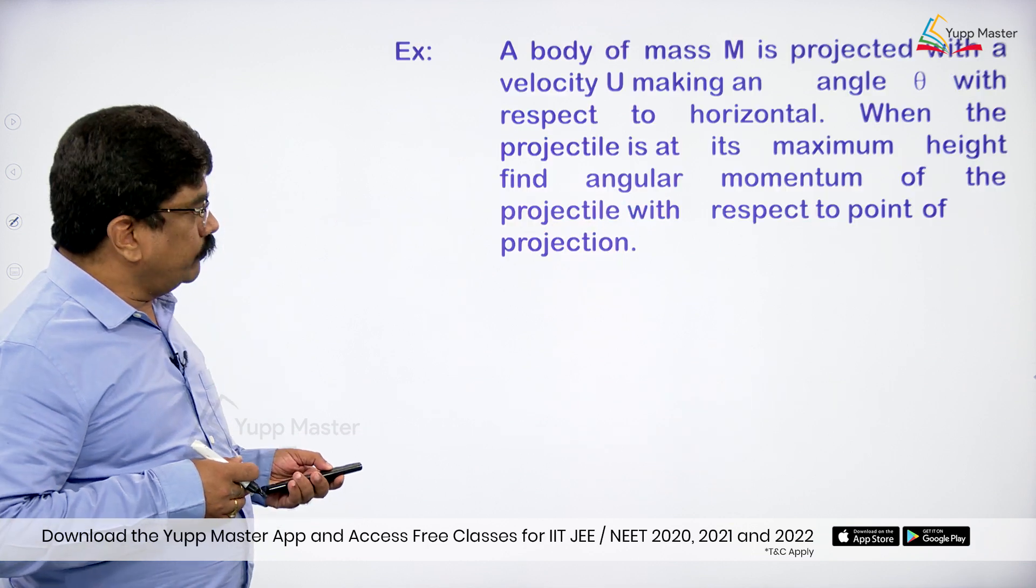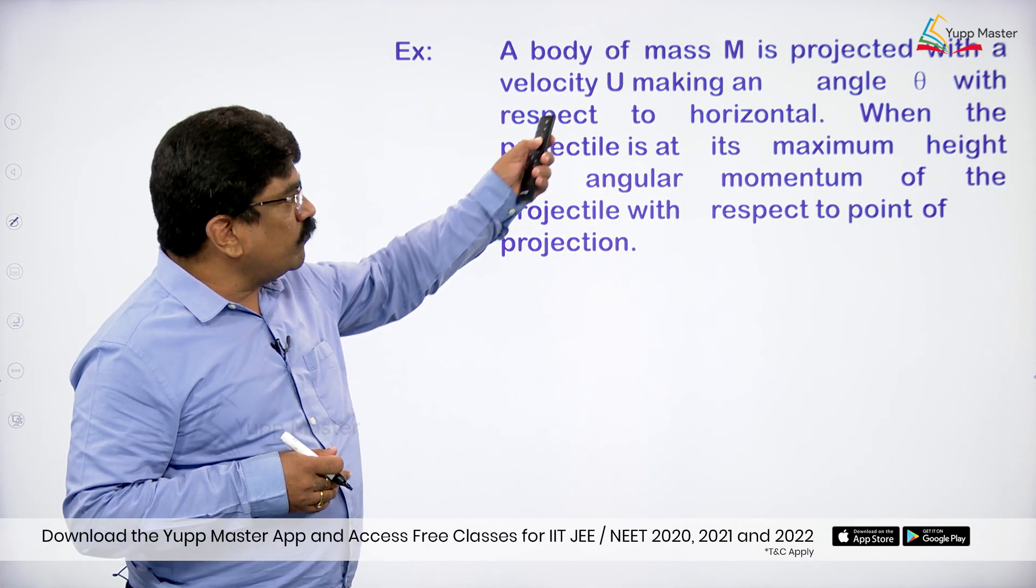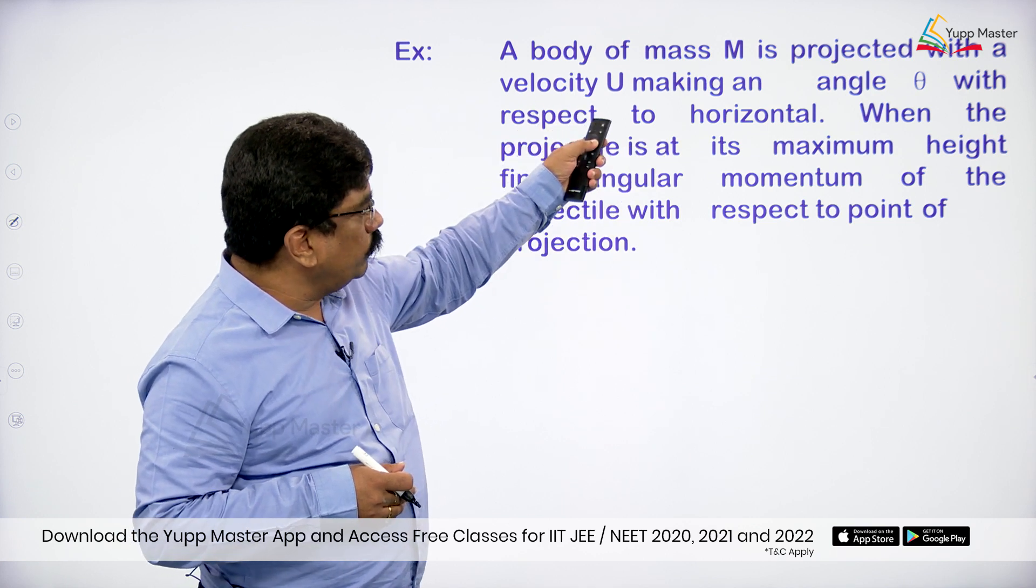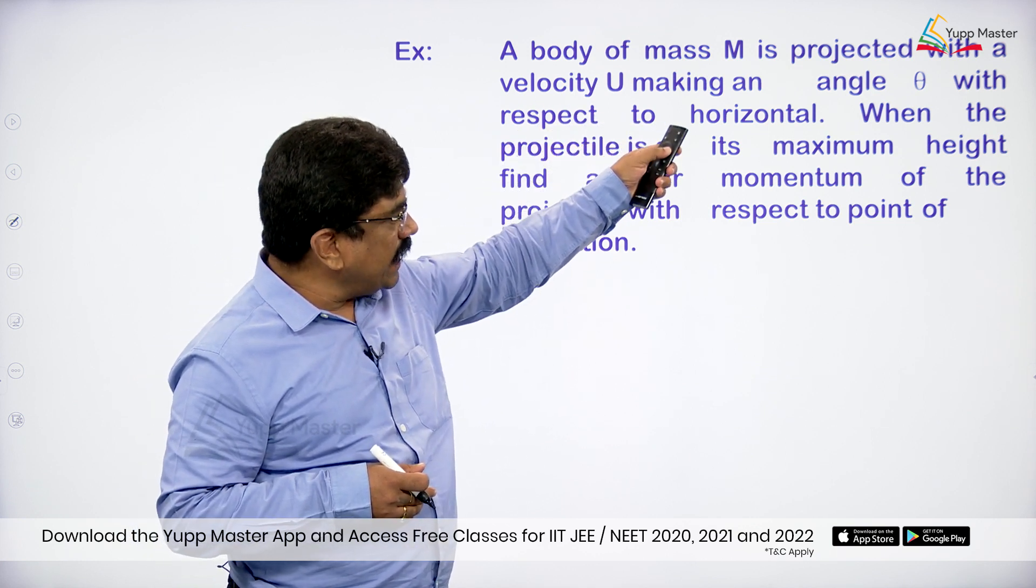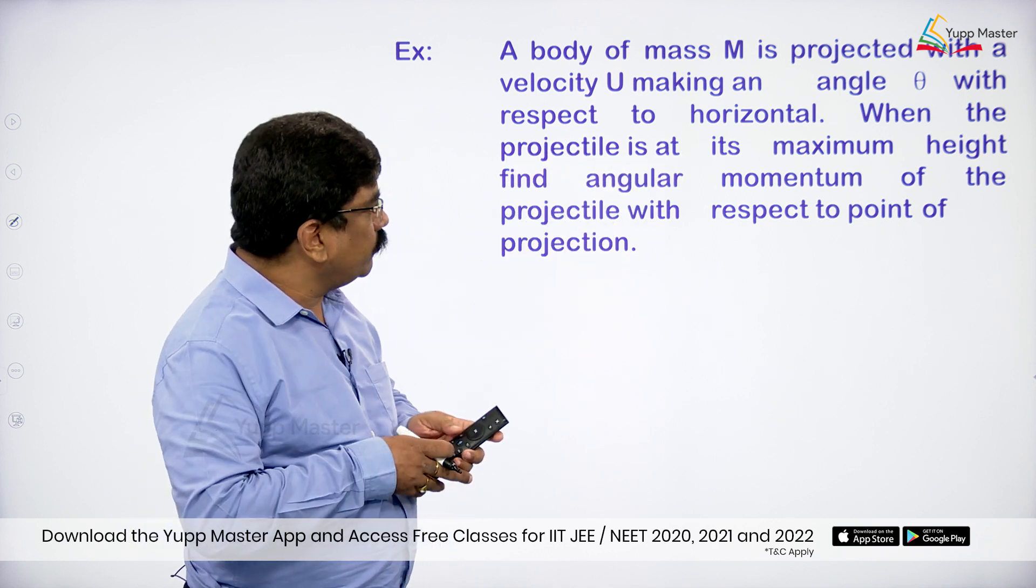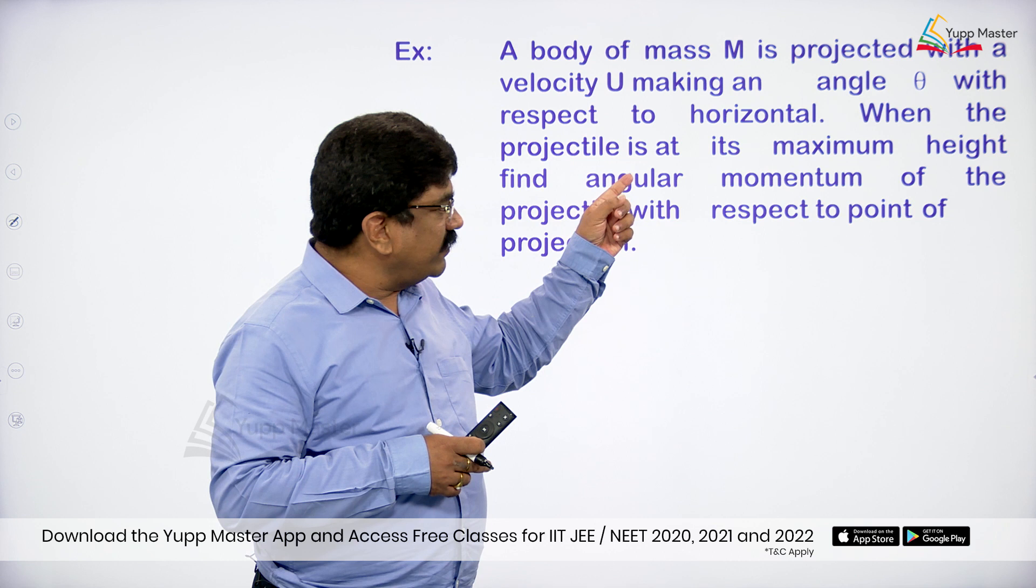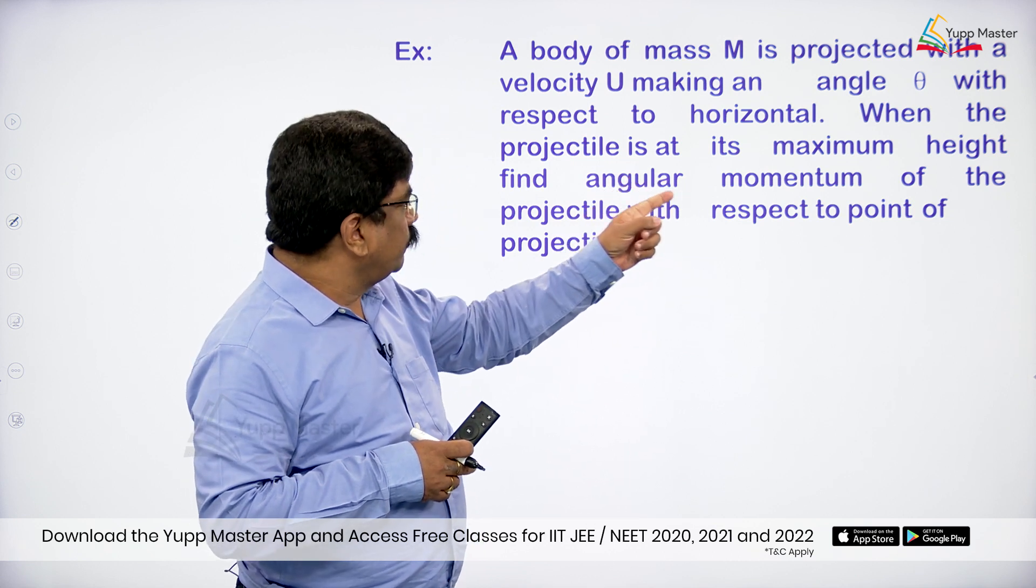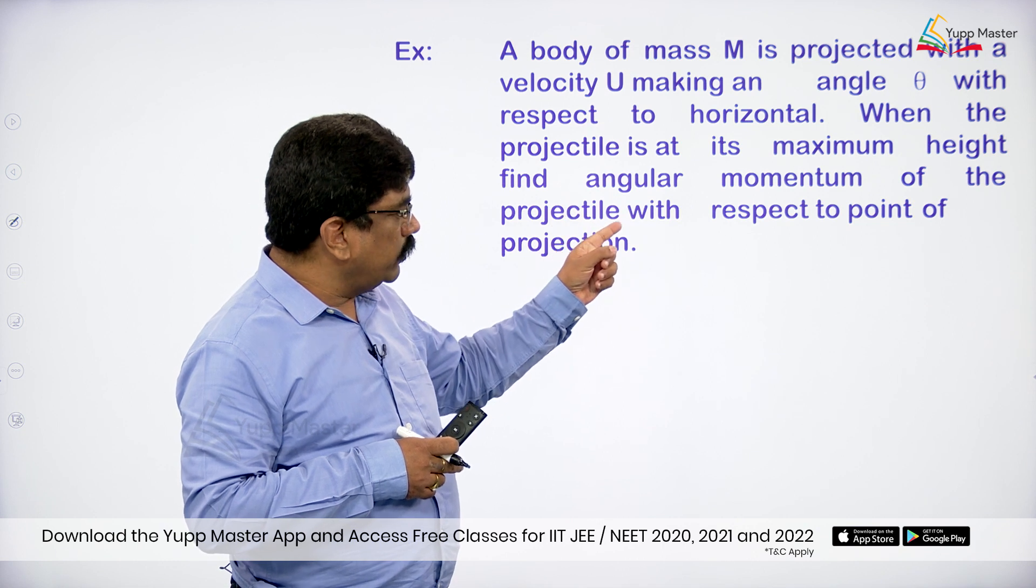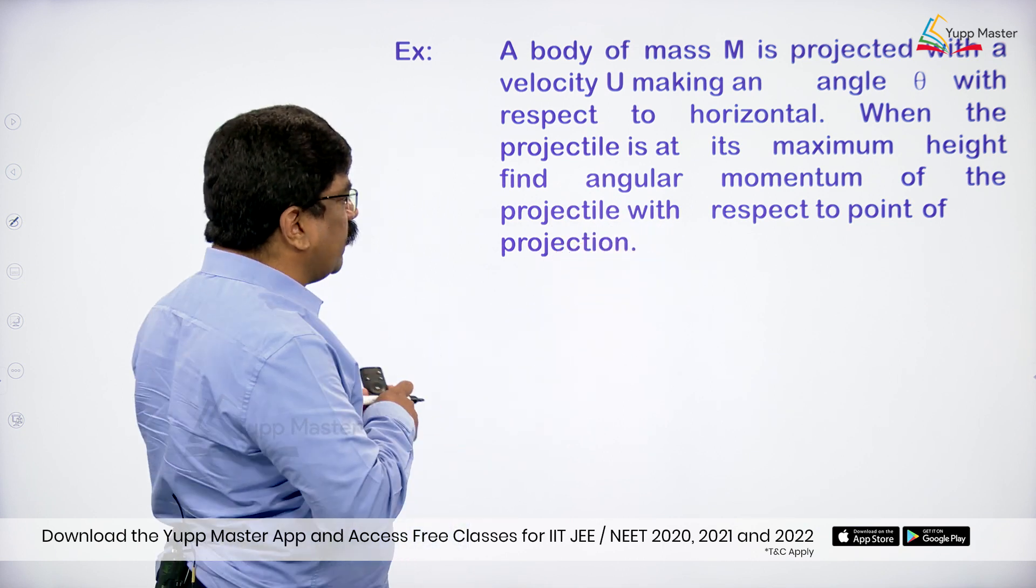So here a body of mass M is projected with a velocity u making an angle theta with respect to horizontal. When the projectile is at its maximum height, find angular momentum of the projectile with respect to point of projection.